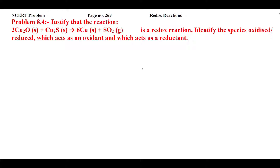Students, this is NCERT problem 8.4 from page number 269 of redox reactions. Let's read the statement: justify that the reaction 2Cu₂O + Cu₂S gives rise to 6Cu + SO₂ is a redox reaction. Identify the species oxidized and reduced, which acts as an oxidant, and which acts as a reductant.